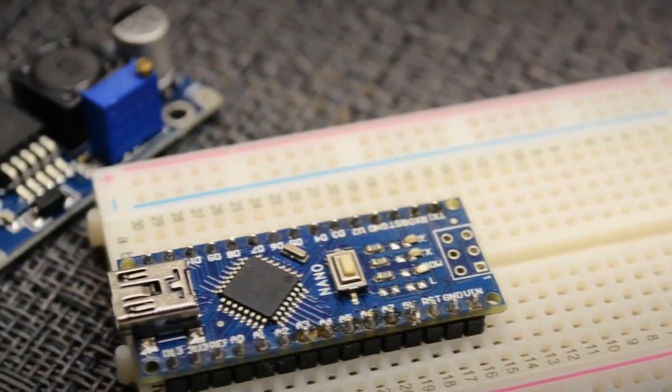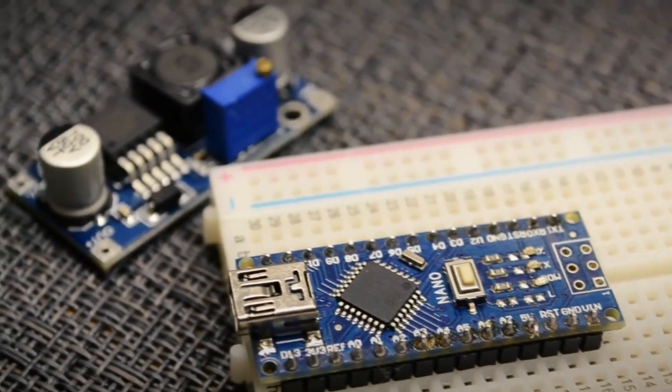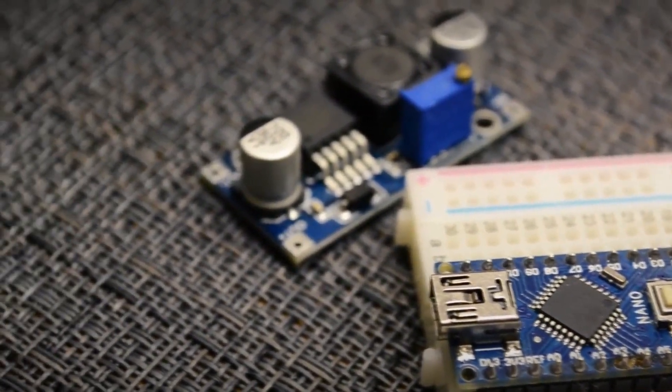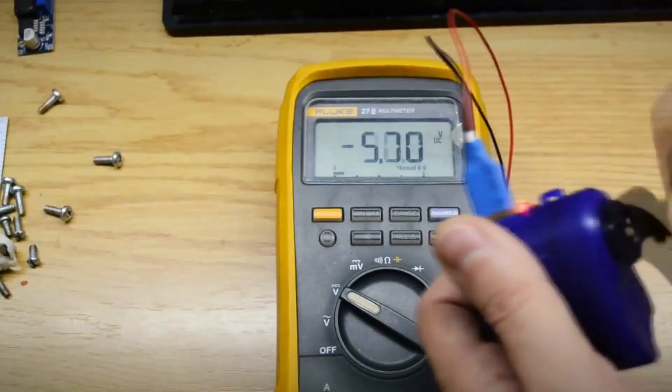After all, the voltage of a lithium-ion battery is only 3 to 4 volts, and for example, Arduino is powered by 5 volts. So, how is the voltage increased in such circuits?